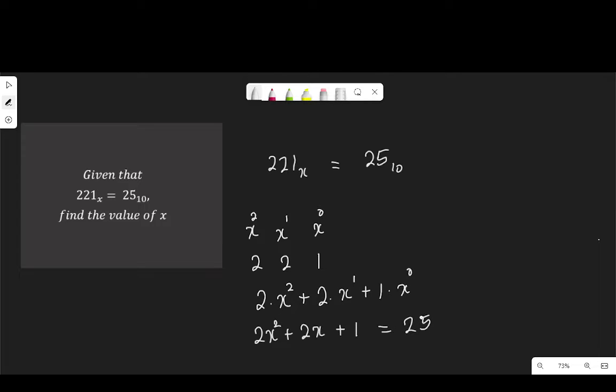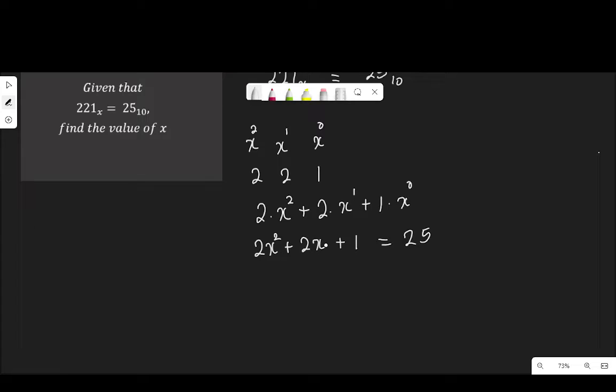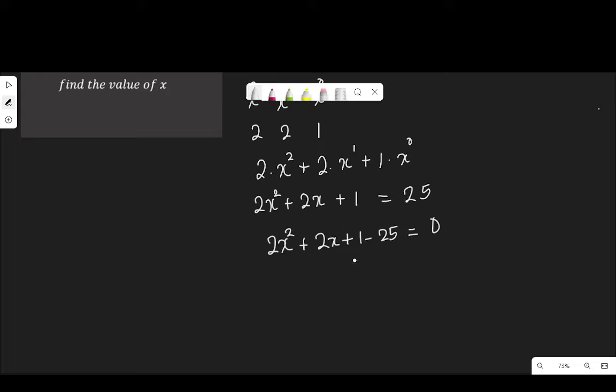25 in base 10. As it is here, we have expressed this number in base 10. So we can solve for X to have 2X squared plus 2X plus 1 minus 25 equal to 0. It's giving us a quadratic equation. So 2X squared plus 2X plus 1 minus 25 is minus 24 equal to 0.